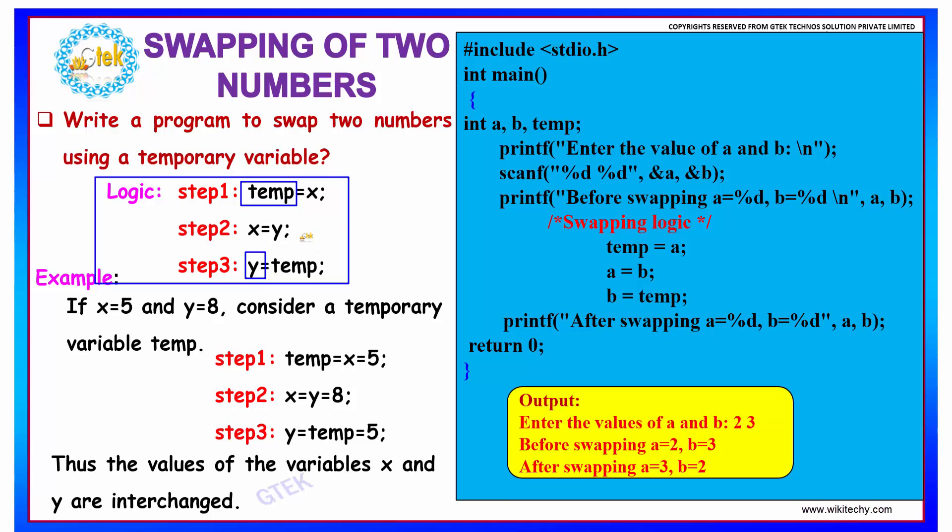So if you see, your x contains the value of your y and your y contains the value of your x at the end of the program. So this is how you can swap two numbers using a temporary variable.